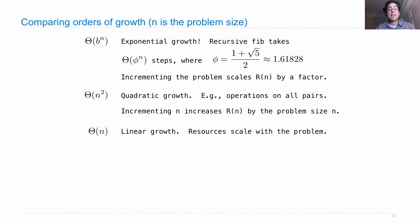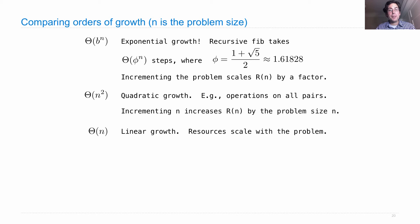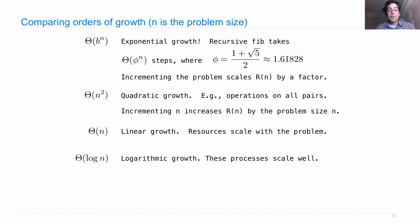Theta n — that's linear growth. Resources scale with the problem size. The bigger the problem, the more resources you need, but there's a linear relationship between them. Theta log n — the example of that we saw was fast exponentiation. That's logarithmic growth. These processes scale very well, because you can handle a problem that's twice the size with only an increment in the resources used.